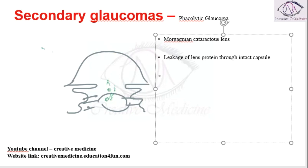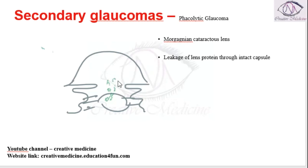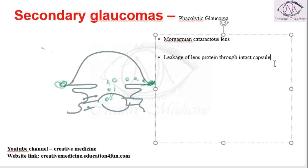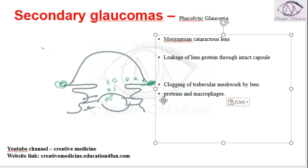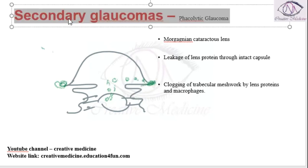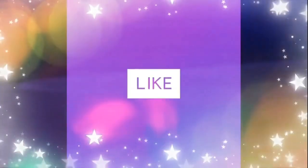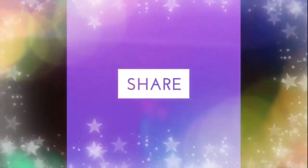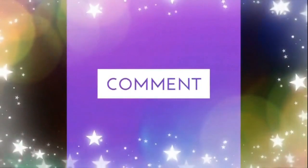The lens proteins travel from the posterior chamber into the anterior chamber, where they block the trabecular meshwork. The clogging of the trabecular meshwork by these lens proteins results in phacolytic glaucoma.